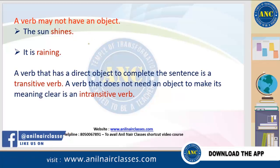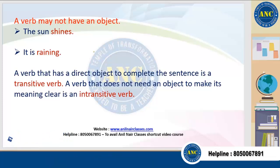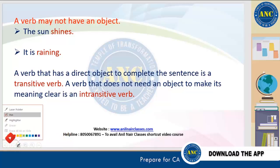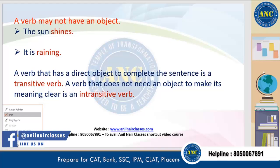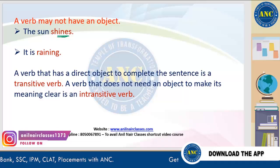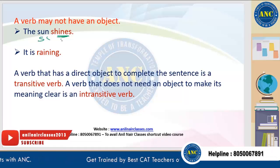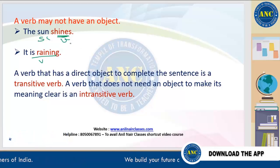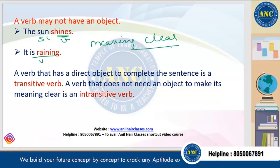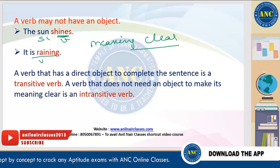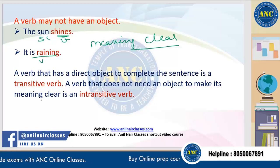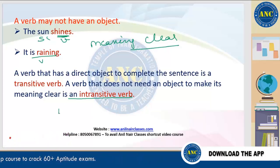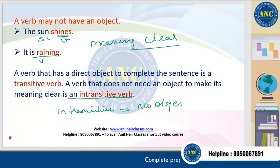A verb may have an object or may not have an object. If the verb is able to convey its meaning without the object, you really don't need the object. If I say 'the sun shines' — the meaning is clear. 'It is raining' — the meaning is clear without any object. So when the object is not there, these verbs are called intransitive verbs. 'In' means no or not — so intransitive verb equals no object.